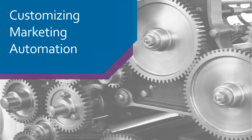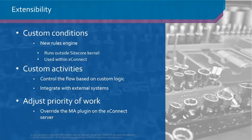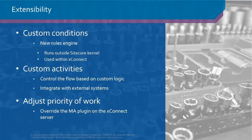Now that we have an overview of the architecture, let's look at ways to customize marketing automation. We'll cover conditions and custom activities. You can also change the configuration of marketing automation — for example, to scale up or out the engine, or to adjust the priority of work so the engine knows a specific custom activity has higher priority than others. I won't be covering configuration in this talk, but everything is documented.